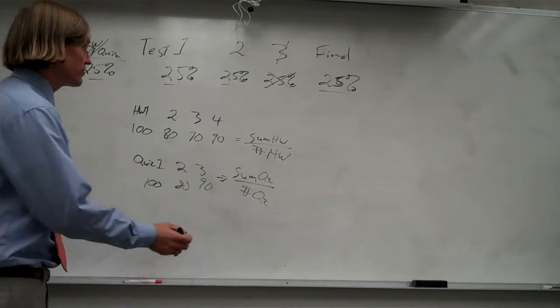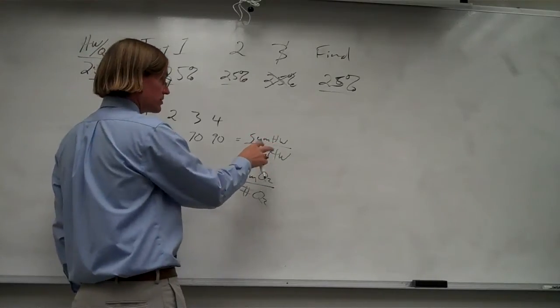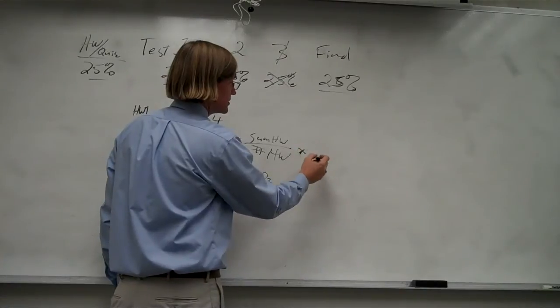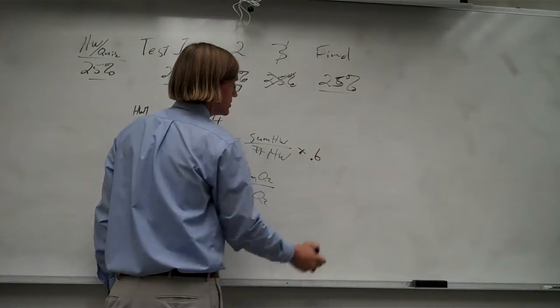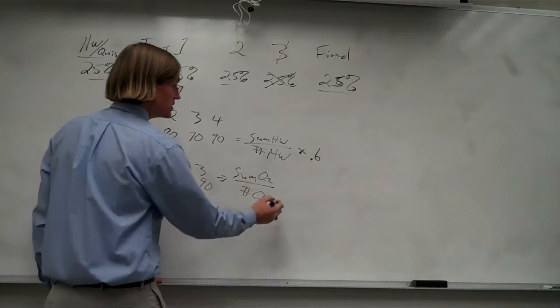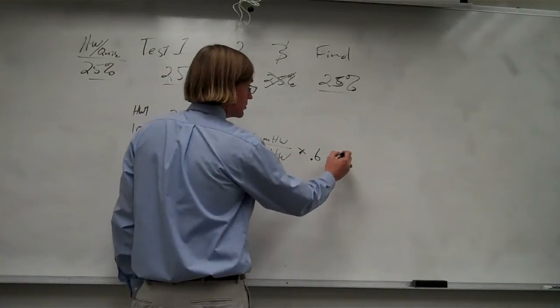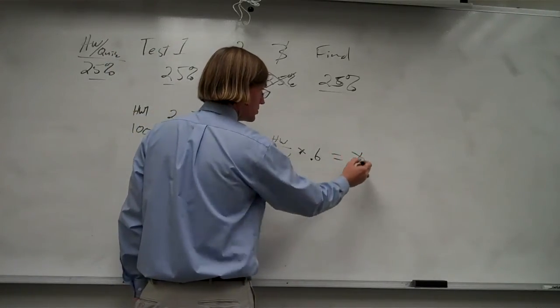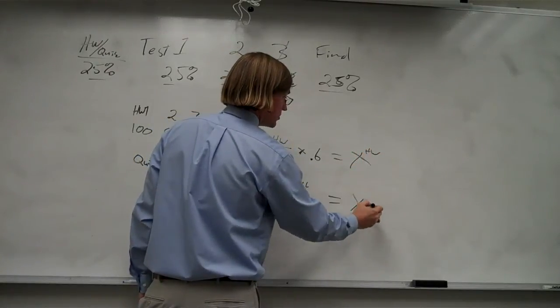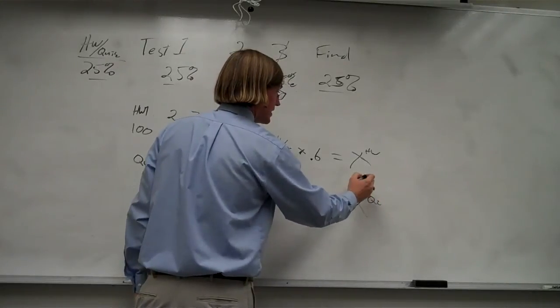Before you add them, whatever your homework average is, I weight the homeworks 60% of your homework quiz grade. So you multiply this by 0.6, and then your quizzes are 40%, so you multiply that by 0.4. Then you add those two together.